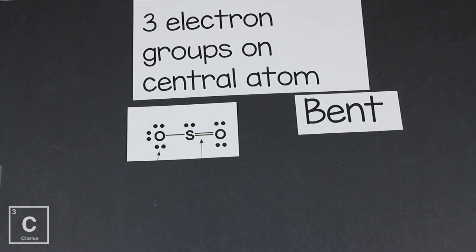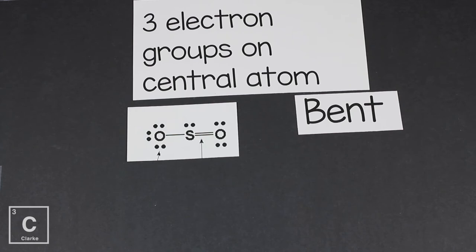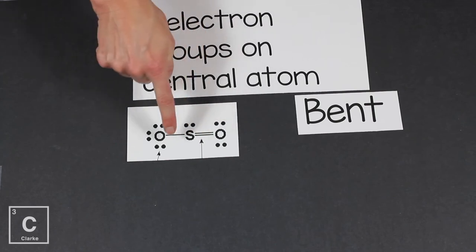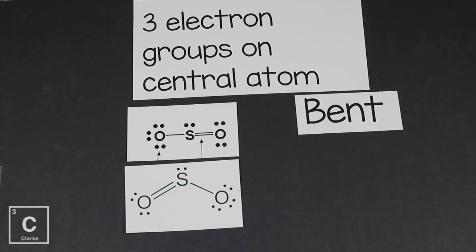A real example is SO2, sulfur dioxide. Remember, it doesn't matter about that double bond — that's just one electron group, and the single bond is another electron group. The lone pairs on the oxygen terminal atoms don't count — we're really just focused on the central atom. If lone pairs are on an outside terminal atom, we ignore them. Because those lone pairs are pressing against those bonds, we get that bent shape.